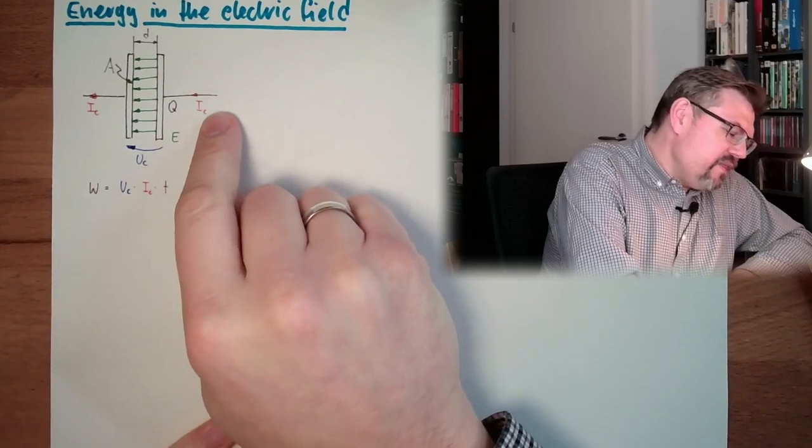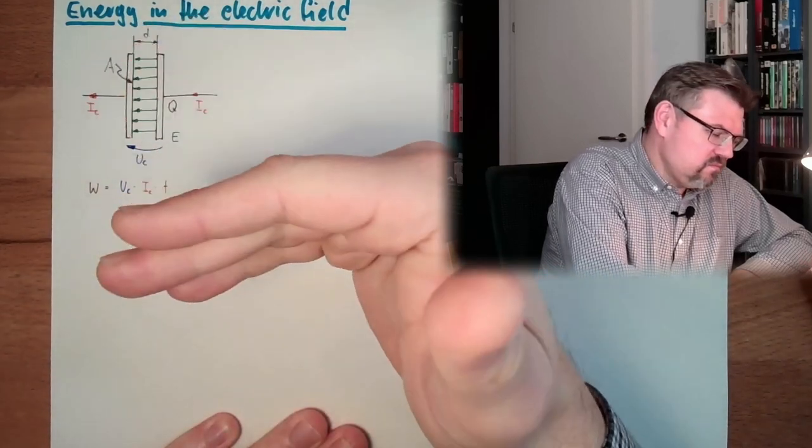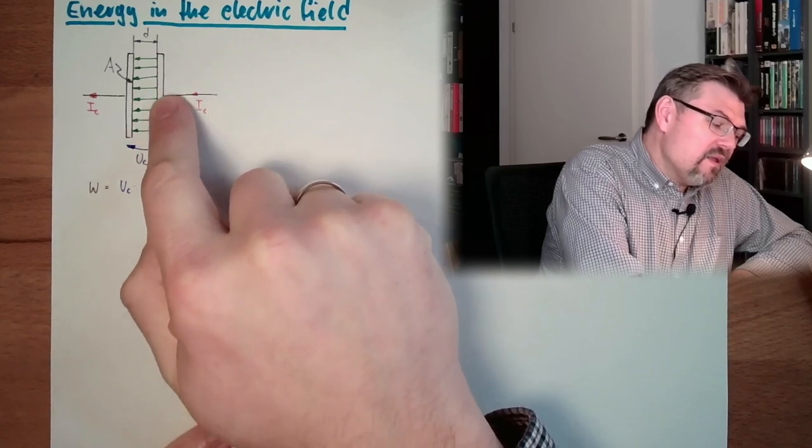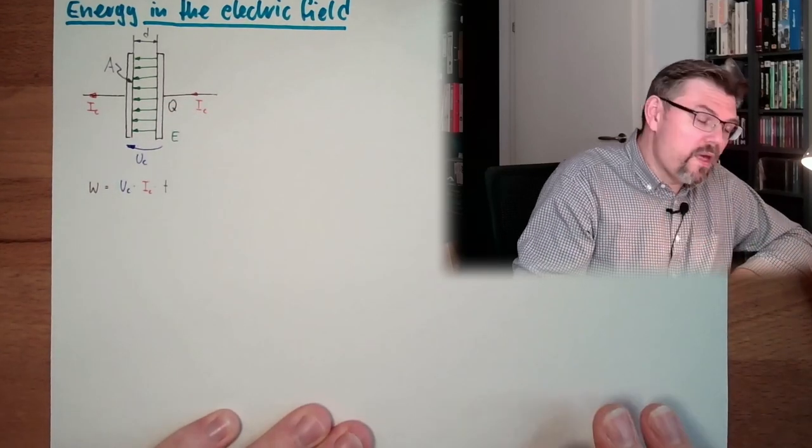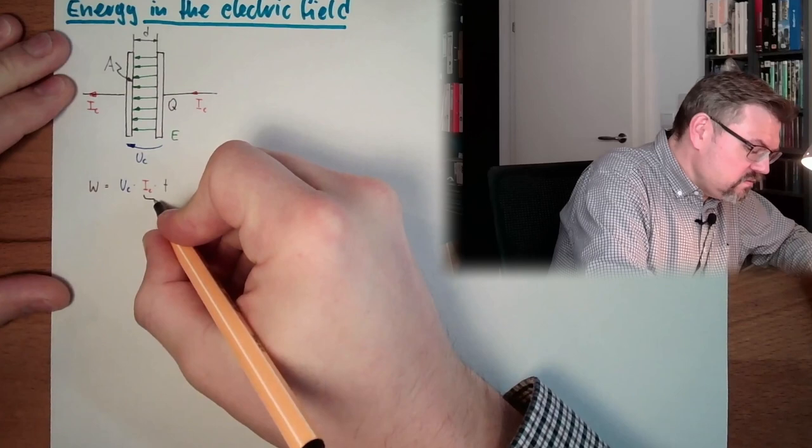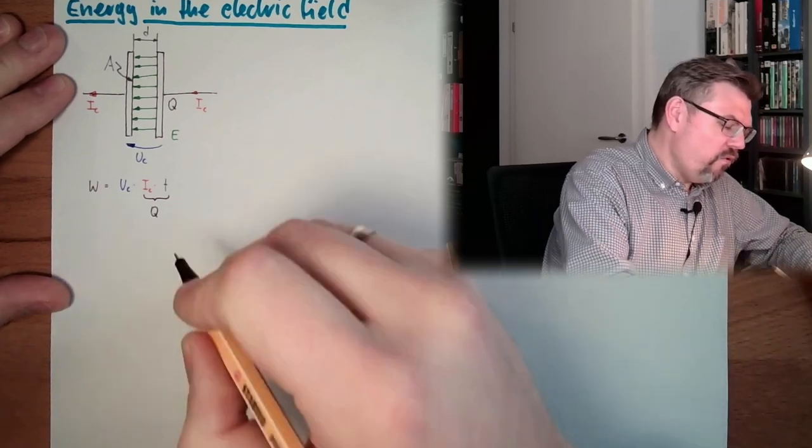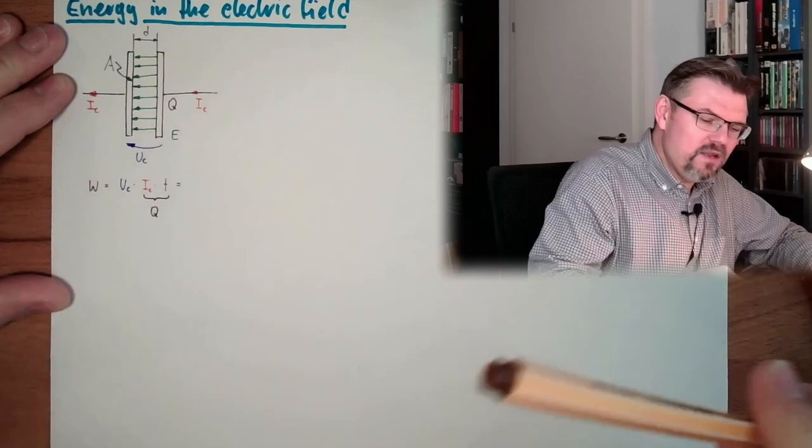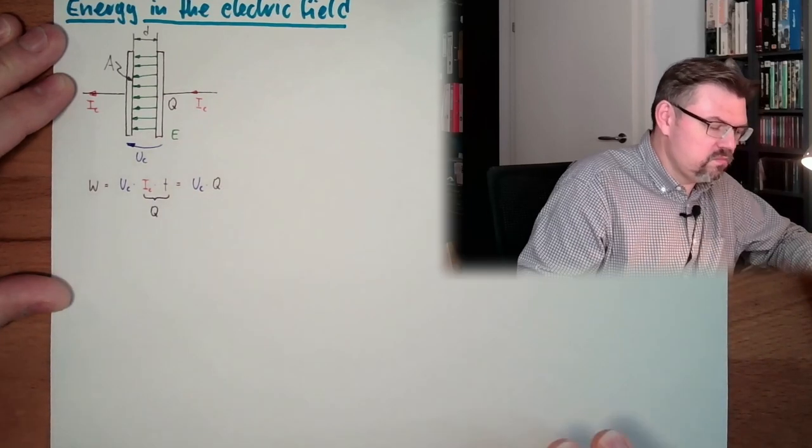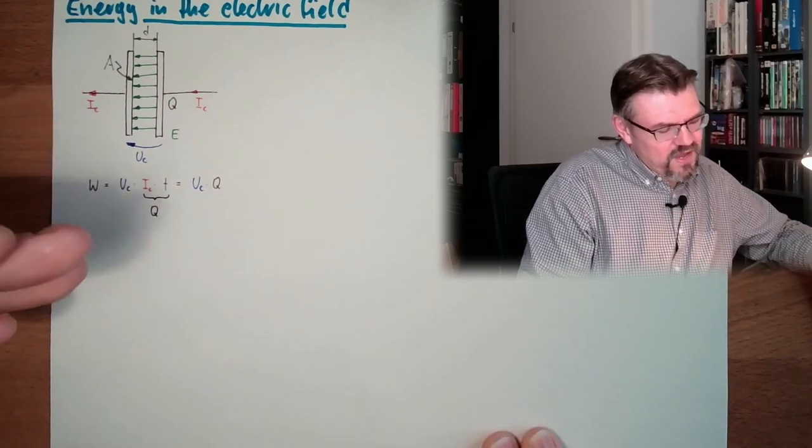And now let's have a look. This current is rushing in onto this plate of the capacitor. So there is Coulomb by second coming and here this is charged to a certain Coulomb level. So actually this here is the charge Q of our capacitor. So actually the work, the energy stored in there is UC multiplied by Q. This is the contained energy.